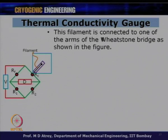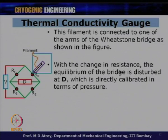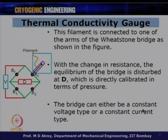The filament is connected to one arm of a Wheatstone bridge. With a change in resistance due to pressure change in the surrounding gas, the bridge equilibrium is disturbed at D, which is directly calibrated in terms of pressure. The bridge can be either constant voltage or constant current type. This is the principle on which the thermal conductivity or Pirani gauge works.